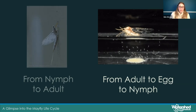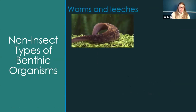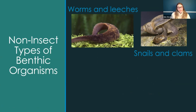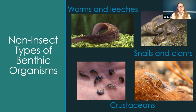We also look at benthic macroinvertebrates that are not insects — things like worms, leeches, snails, clams, and a wide variety of crustaceans. These include leeches, snails, scuds, and sow bugs — also called isopods — which are the aquatic version of the roly-poly we might see in our gardens.